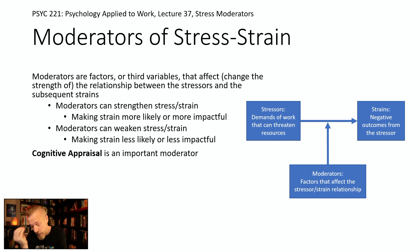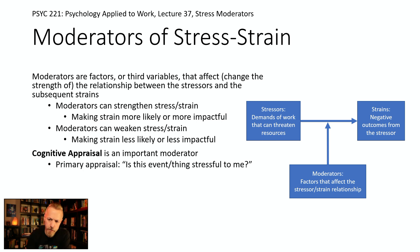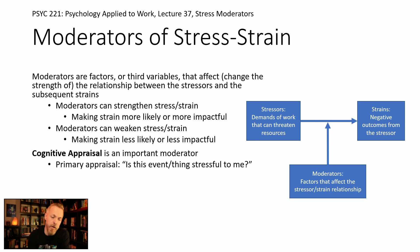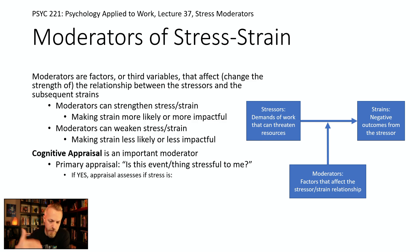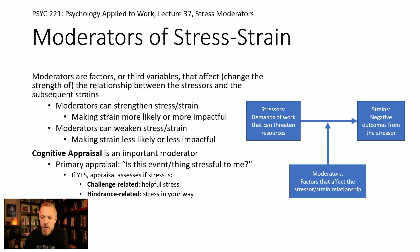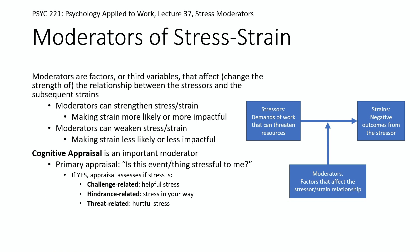Cognitive appraisal is a really important aspect of moderation. When looking at stress, you typically do a primary appraisal — implicitly asking yourself: is this stressful? If you identify it as stressful, you then assess whether it's challenge-oriented, like 'that's in my way,' or hindrance-related, like 'that could hurt me.'